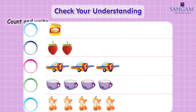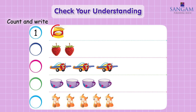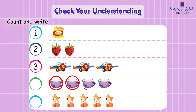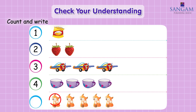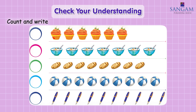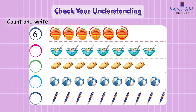Count and write. One chip. One, two strawberries. One, two, three aeroplanes. One, two, three, four, five, six cupcakes.